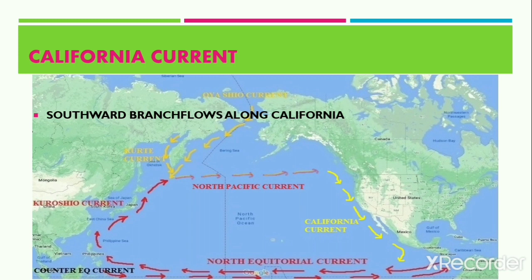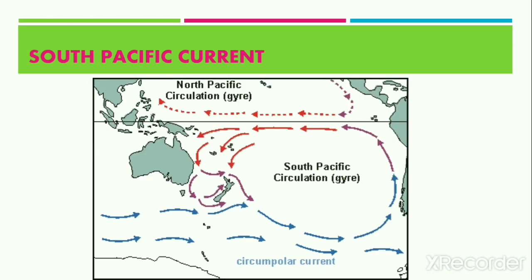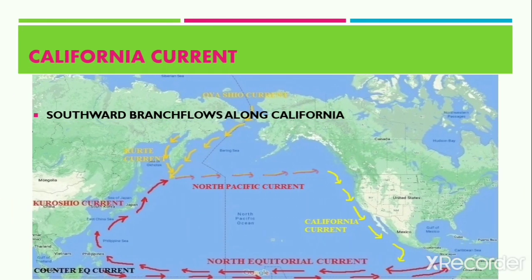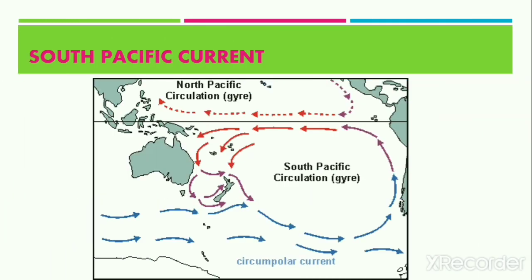On reaching the west coast of North America, the southern branch turns towards the south and washes the coast of California. This is known as the Californian Current. Since these currents move from a cold region to comparatively warmer areas, it is a cold current. This completes the North Pacific gyre system.